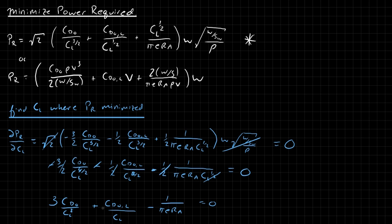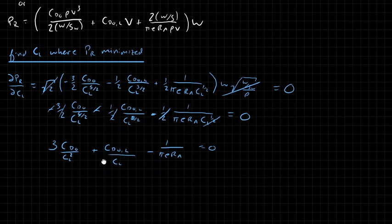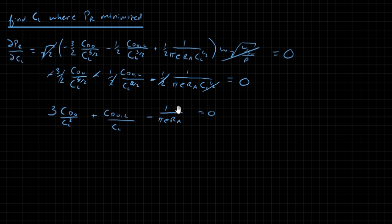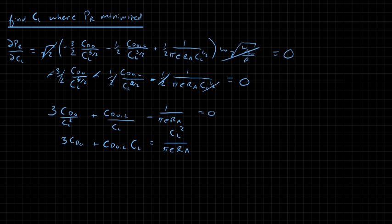Now we multiply this entire thing through by CL squared and bring the last term over to the other side. What we're left with is 3*CD_naught plus CD_naught_L times CL equals CL squared divided by pi*e*AR.